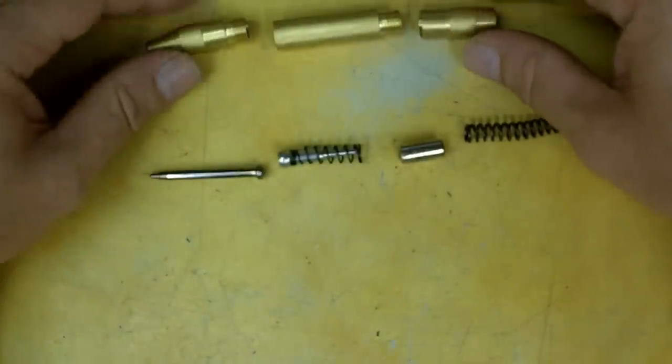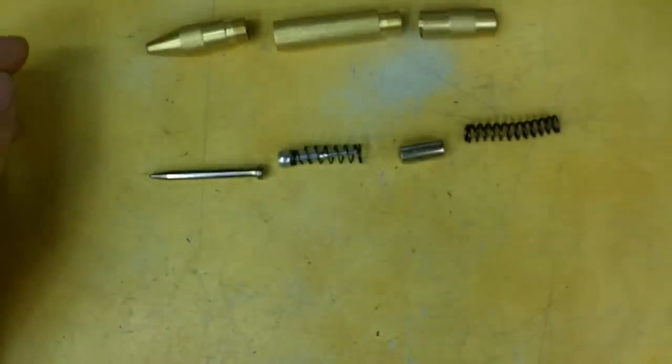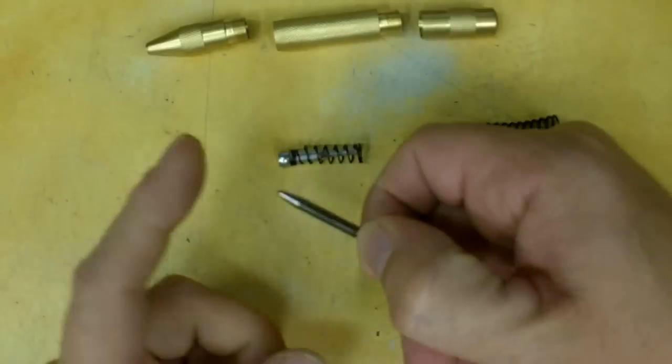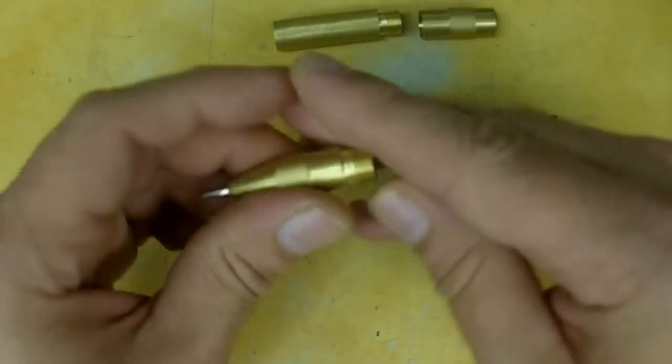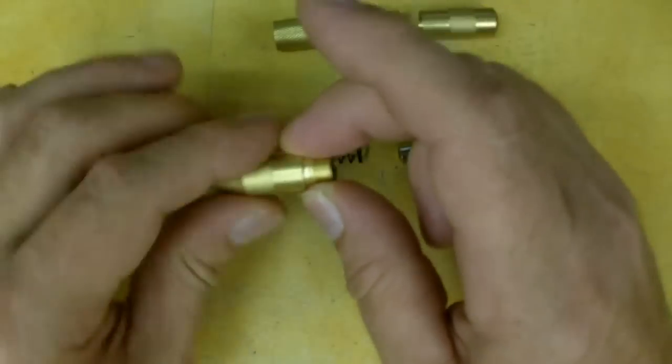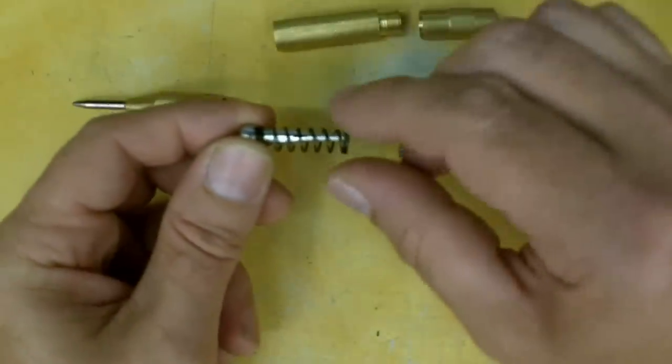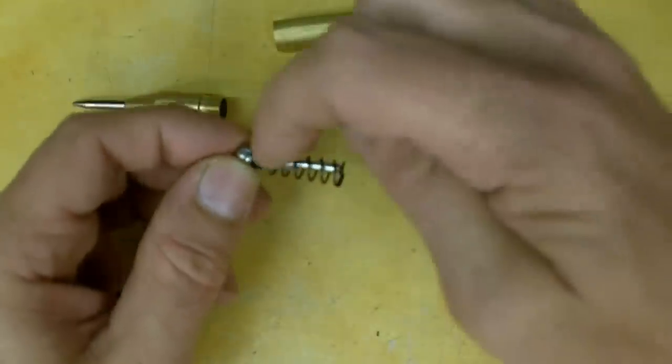So this is basically it in a nutshell. The first part that you would have going in here is your actual point that would strike a center. Simply goes in there like that. When you start pushing down on it, it in turn pushes on this piece right here, and you can see how this spring is offset.